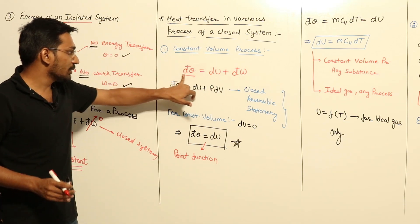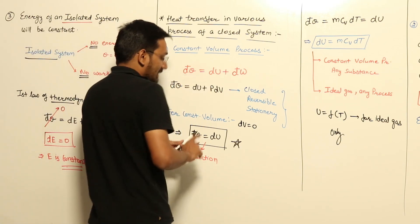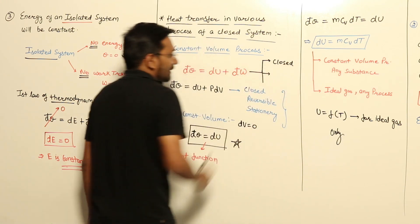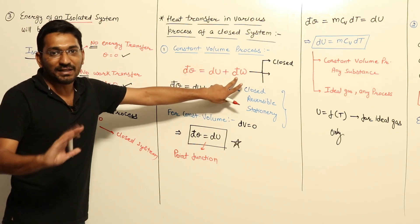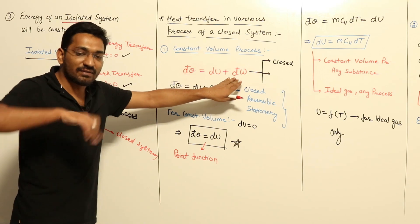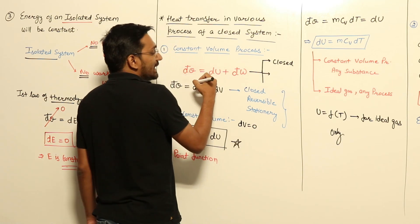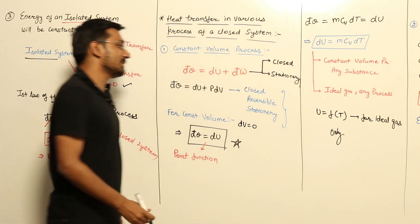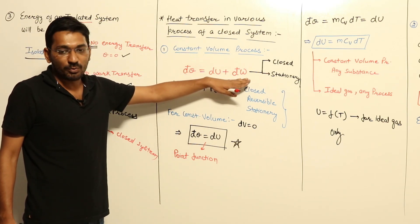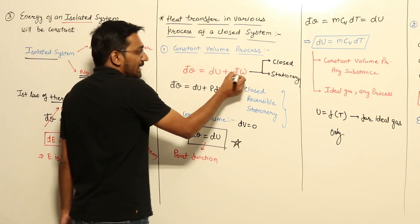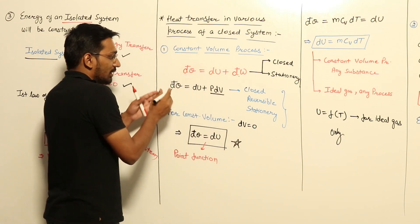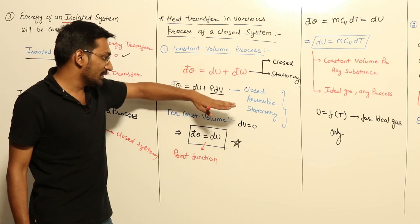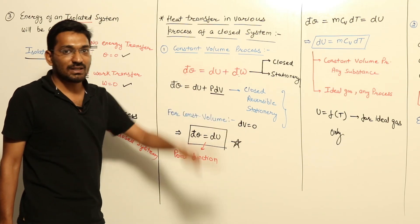What are the assumptions for writing this equation? The assumptions are: system must be closed. I am writing DW not PDV, so the process may be reversible or irreversible — that does not matter. But I am writing DE equal to DU, so the system must be stationary. If I write DW equal to PDV, then it is a reversible case, giving us the first law as DQ equal to DU plus PDV. The assumptions for using this formula are: closed system, reversible process, and the system must be stationary.